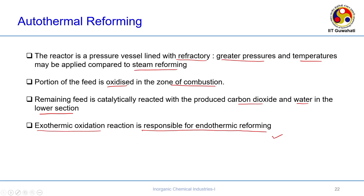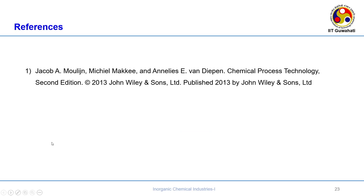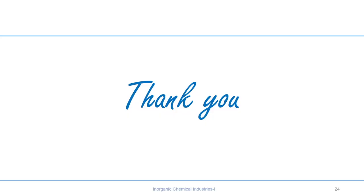To conclude, we have covered the steam reforming and autothermal reforming of natural gas for syngas production. For further details and schematics, refer to Maulik's book, which also covers the secondary reformer used to reduce methane conversion. In the next lecture, we will see what happens with the gasification of coal.